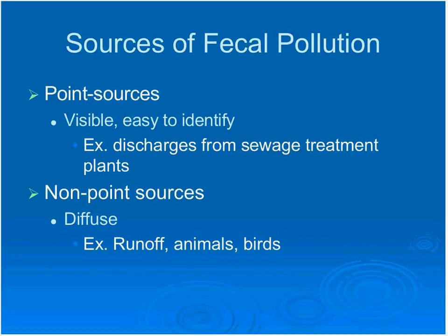There are basically two groups of fecal pollution sources. There are point sources, which are usually structural and easy to identify — they include things like sewage outfall pipes. And then there are nonpoint sources, where microbial source tracking becomes especially useful because these sources are more diffuse. They include things like runoff, animals, and birds.